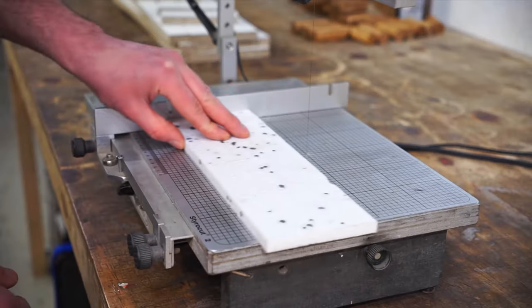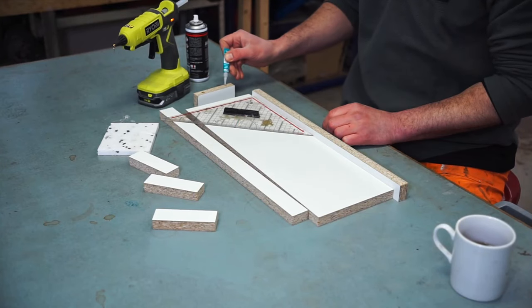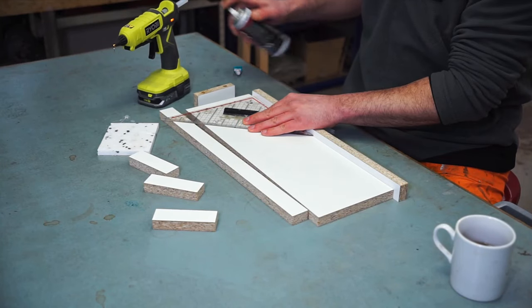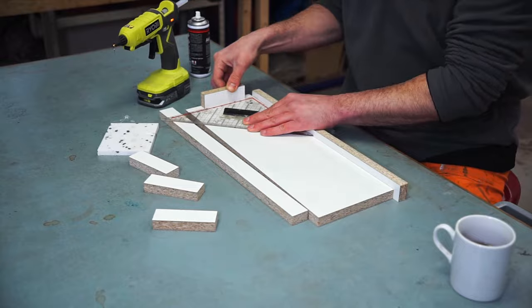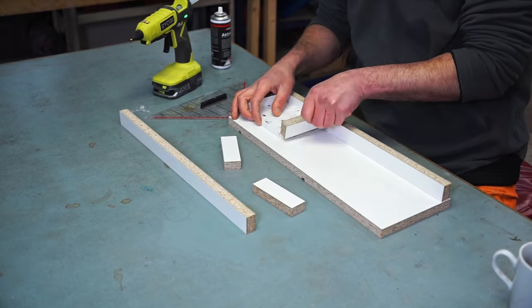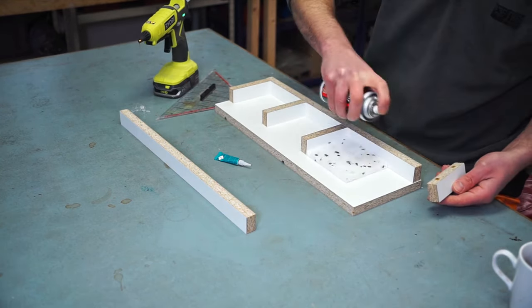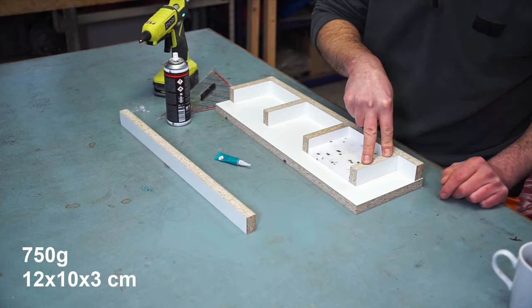From old styrofoam scrap pieces I cut a spacer to build the mold quicker, but you can also measure the distance. To make this project even simpler I use CA and hot glue to make the mold. I used activator to make this process quicker.